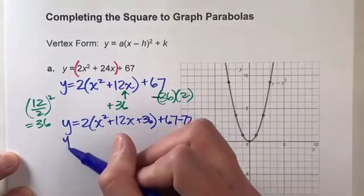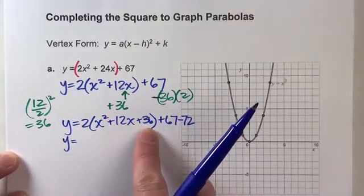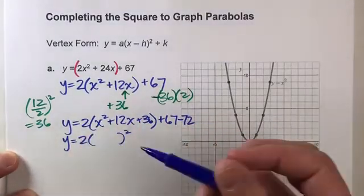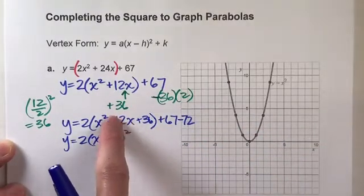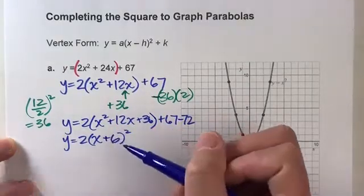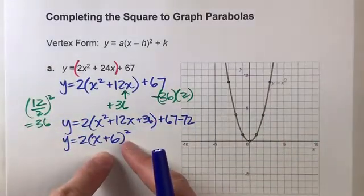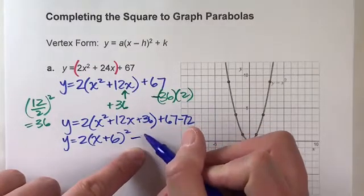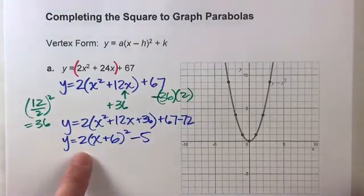And now, the whole reason we added the 36 in the parentheses is because this is now a perfect square. So now I can rewrite that as a perfect square. We know there's an x there. If we take the coefficient next to x and divide it by 2, I get positive 6. So I know this is x plus 6 quantity squared. Now, on the outside, I've got 67 minus 72, which is minus 5. And would you look at that? I am now in vertex form.